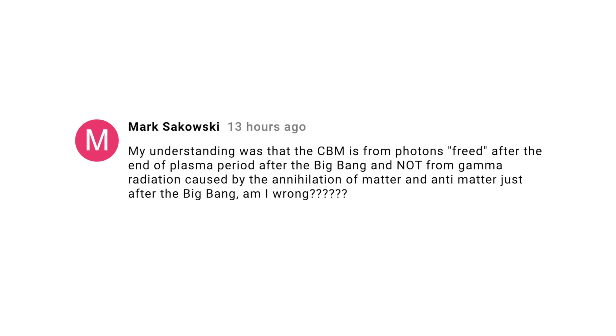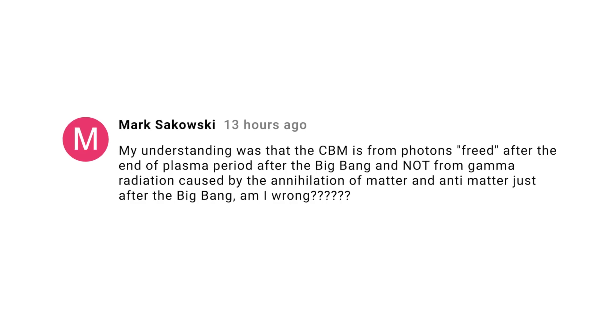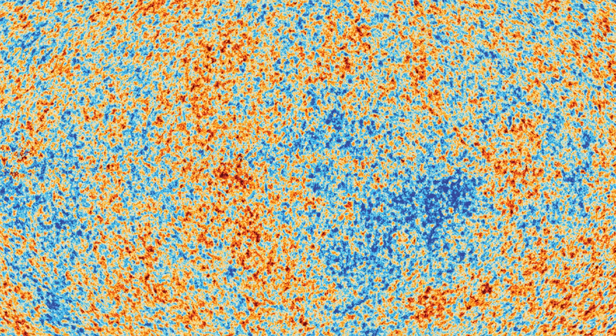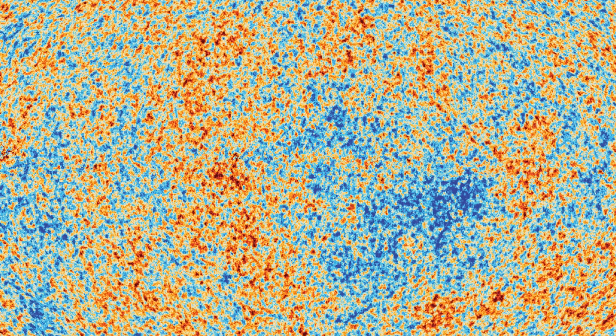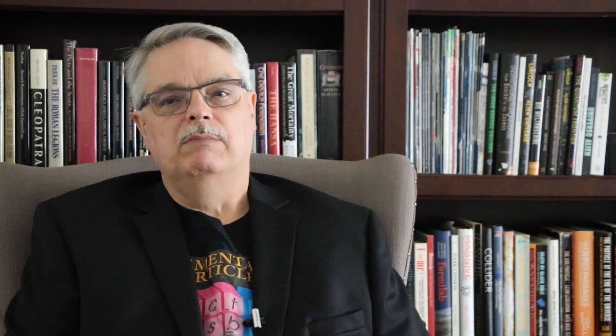Mark Sikowsky asks about the cosmic microwave background radiation — he thought it was due to photons from the plasma of the early universe and not gamma rays emitted by matter-antimatter annihilation. Well, good news: you're right, but so am I, so naturally the answer is complicated. The matter-antimatter annihilation emitted gamma rays which heated up the remaining matter. That matter absorbed the gamma ray photons and re-emitted them at different wavelengths. The process repeated over and over, compounded by the expanding universe. The CMB photons are from the plasma that existed about 400,000 years after the Big Bang, but their origin was from the original gamma rays.